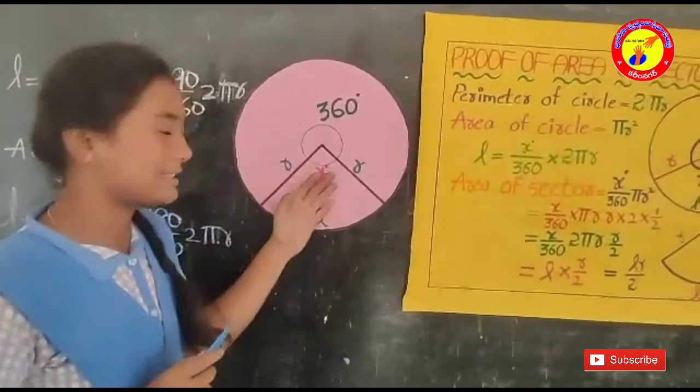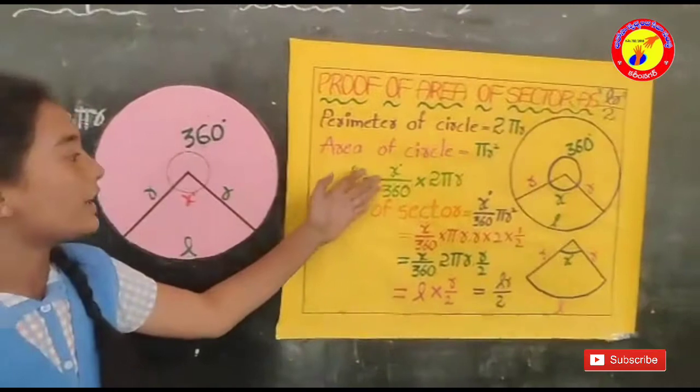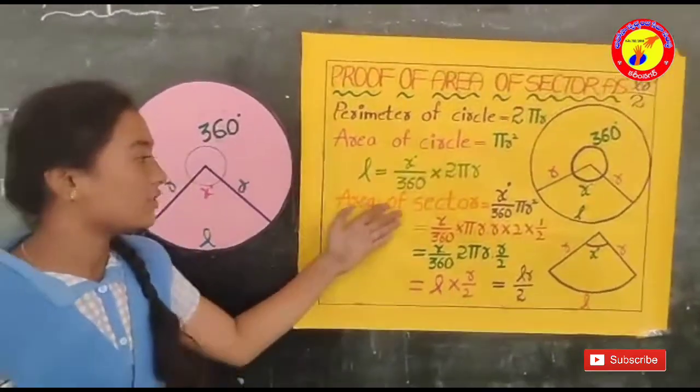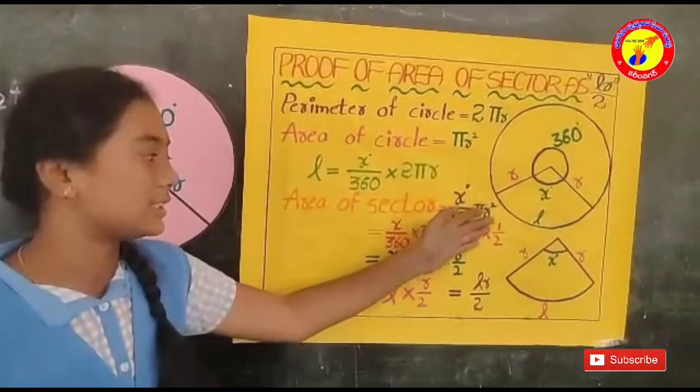If the angle of the sector is x degrees, then L is equal to x by 360 into 2πR. And the area of sector is equal to x by 360 into πR square.